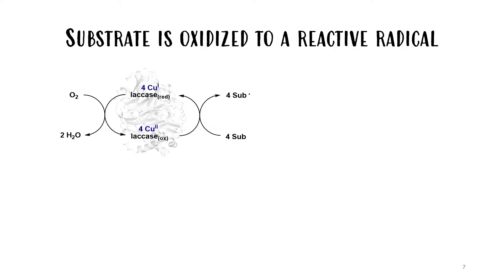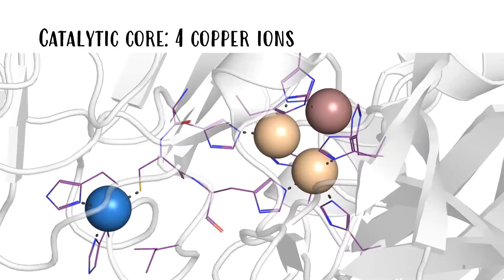The reactions catalyzed by lacases proceed by the mono-electronic oxidation of a suitable substrate molecule to the corresponding reactive radical. This is accomplished by four copper atoms that constitute the catalytic core of the enzyme. Three types of copper can be distinguished based on their environment and spectroscopic characteristics.